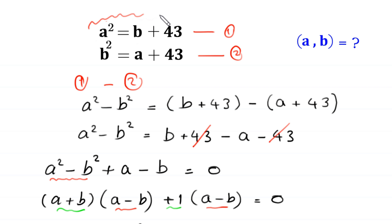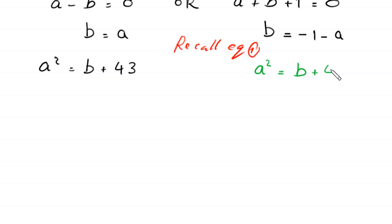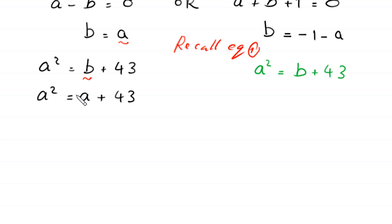We recall equation 1: a squared equals b plus 43. In the first case, we replace b with a, so this becomes a squared equals a plus 43. Moving terms to the left hand side gives a squared minus a minus 43 equals 0.